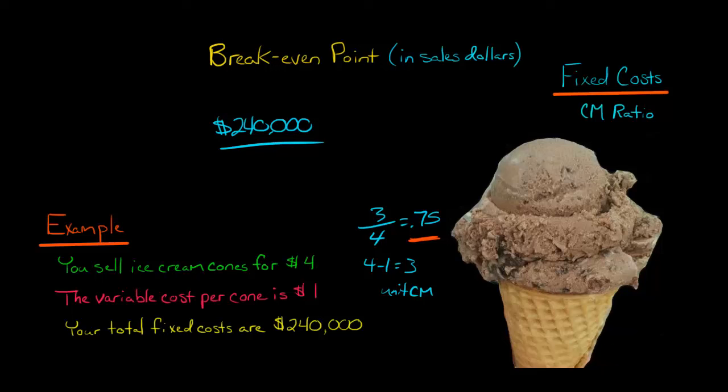So now we're going to take that 0.75. We're going to plug it in here because it's our contribution margin ratio. Sometimes people express it in terms of percentage, like 75%, but we'll just put 0.75 here to make the math easy.